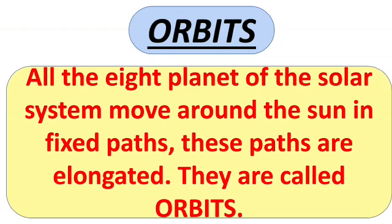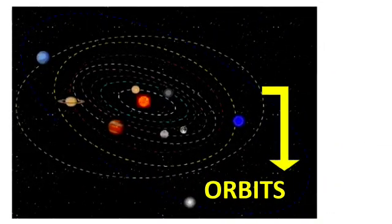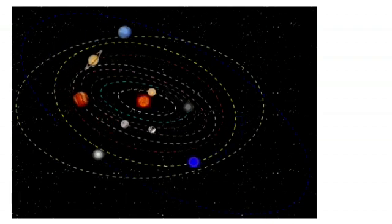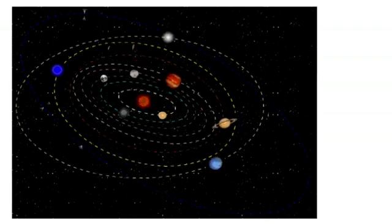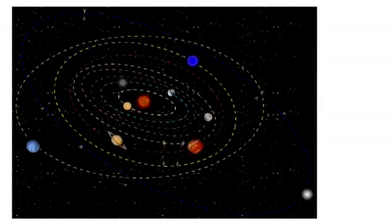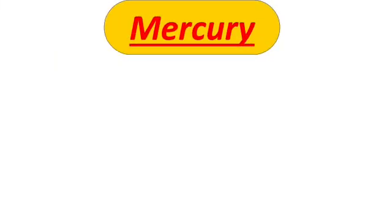All eight planets revolve in a fixed path at different distances, and that fixed path is called an orbit. You will see all the planets revolving around the sun in a fixed path and not crossing into another planet's path. That dotted imaginary line is an orbit.